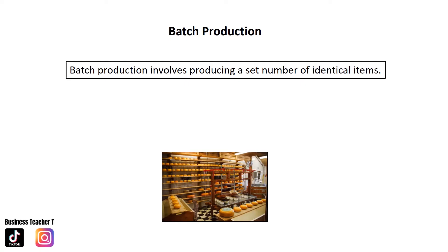Batch production involves producing a set number of identical items. The amount of products in a batch can vary — it may be 12, it may be 50, it may be hundreds. It is dependent on the business and what they are actually producing.